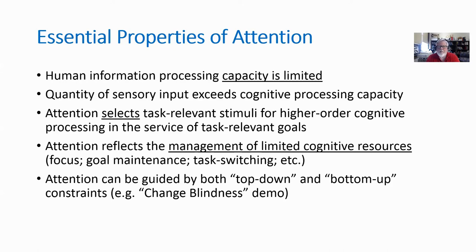What is the right information? Well, that depends on your goal — the right information is goal-relevant or task-relevant information. Attention can also be more complex in that we might be managing multiple goals at the same time, and we have to switch back and forth between those goals concurrently — the so-called multitasking situation.